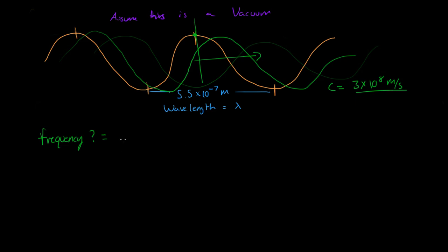So what we get is the frequency, which is nu. Nu is equal to the speed of light divided by lambda.